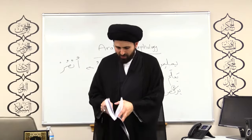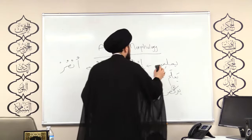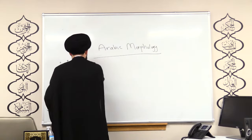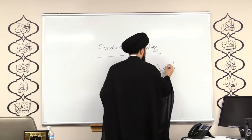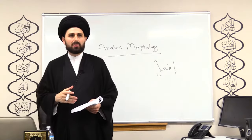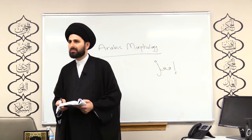The six forms of fi'l al-amr: First form — if you are talking to one person who is male (singular masculine), the commanding verb will be if'al. For example: ijlis, ishrab, urkud, unsur, i'lam, and so on.